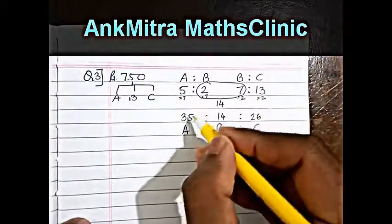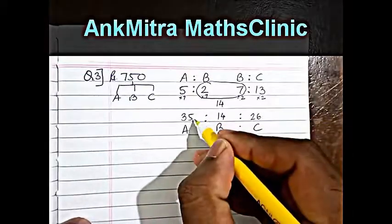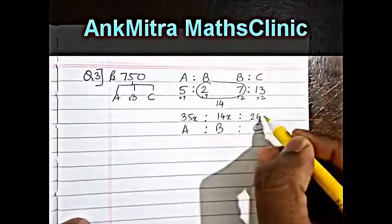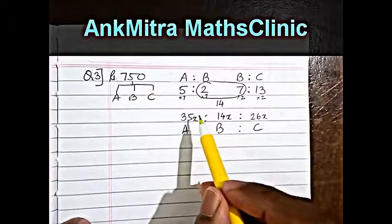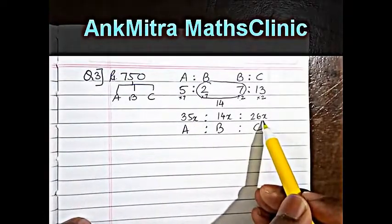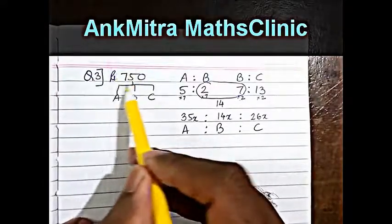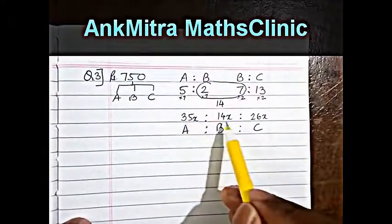So how do we distribute it? So putting a common multiplier to each of these values x, we have 35x plus 14x plus 26x is equal to 750, right? The total amount is 750 and is distributed in this fashion.